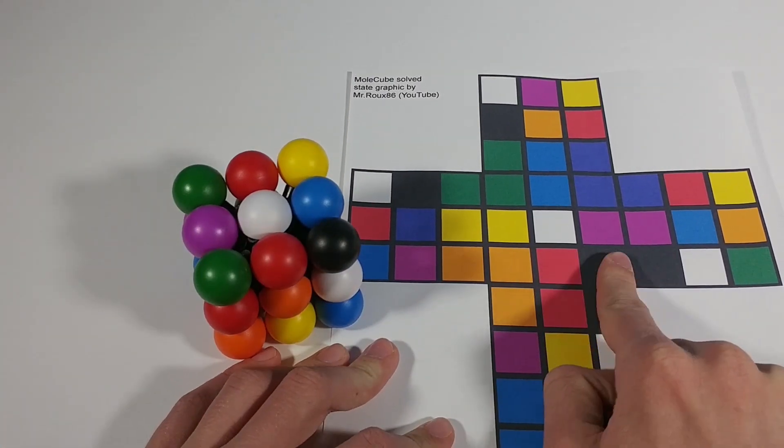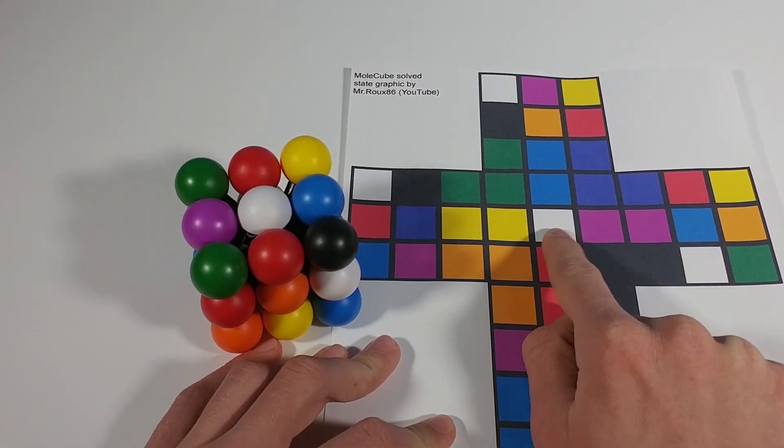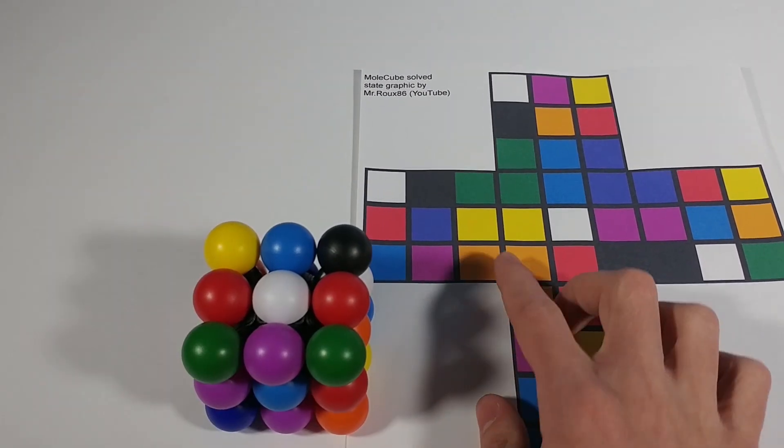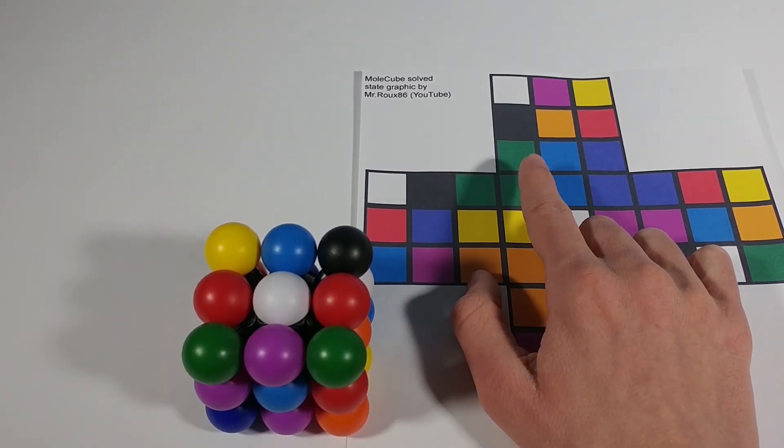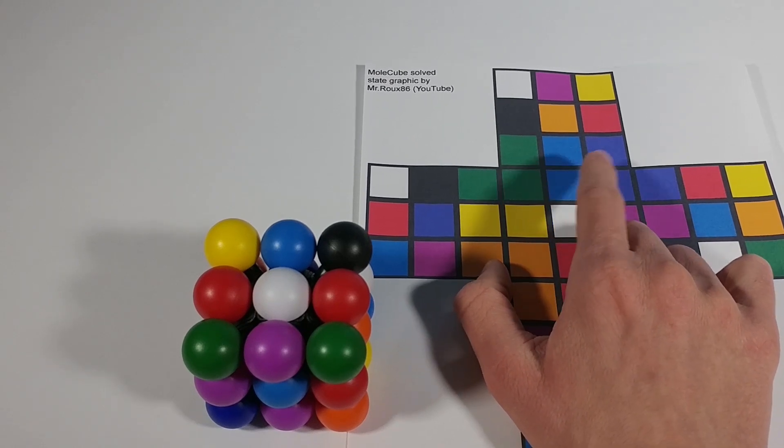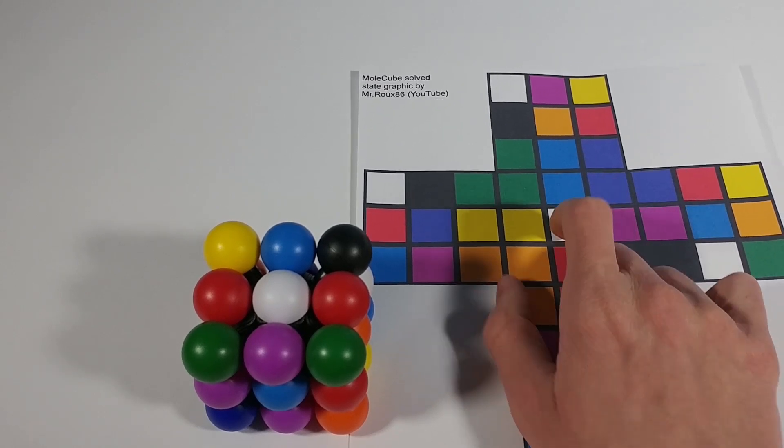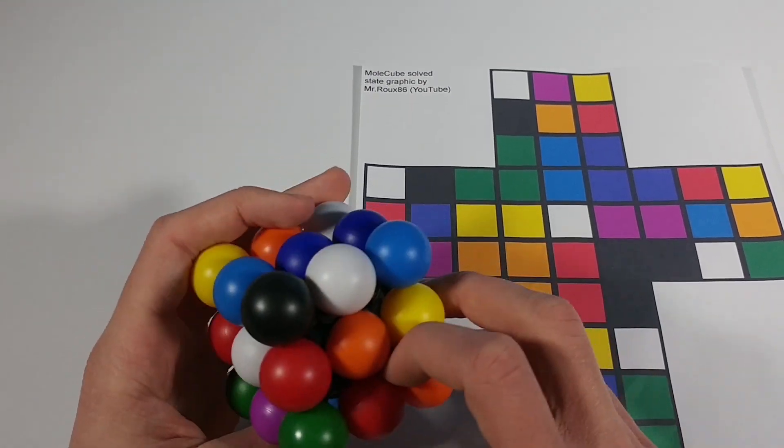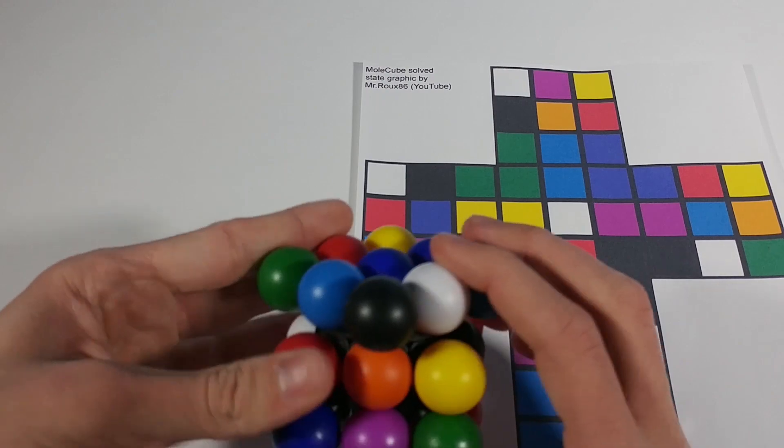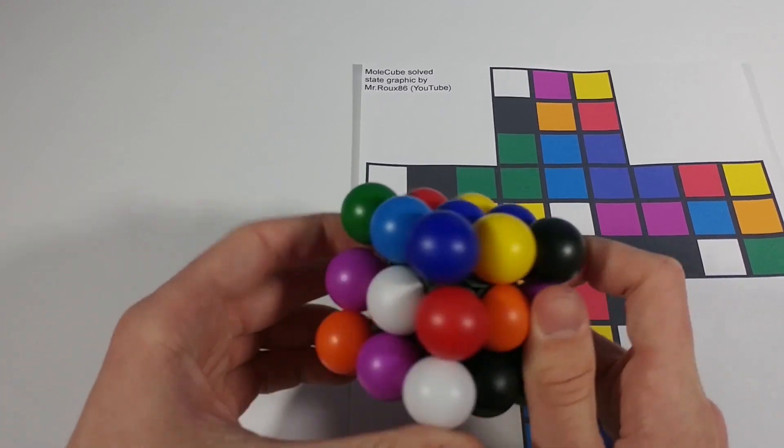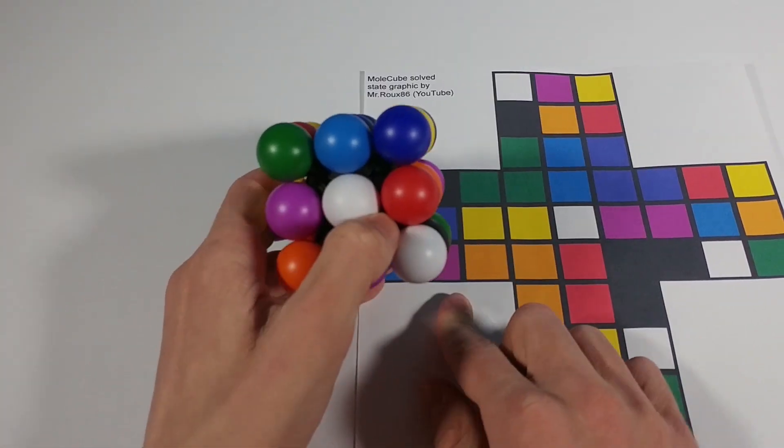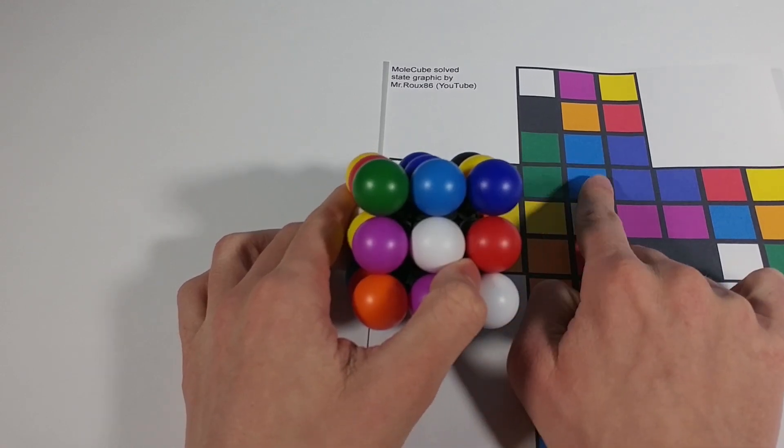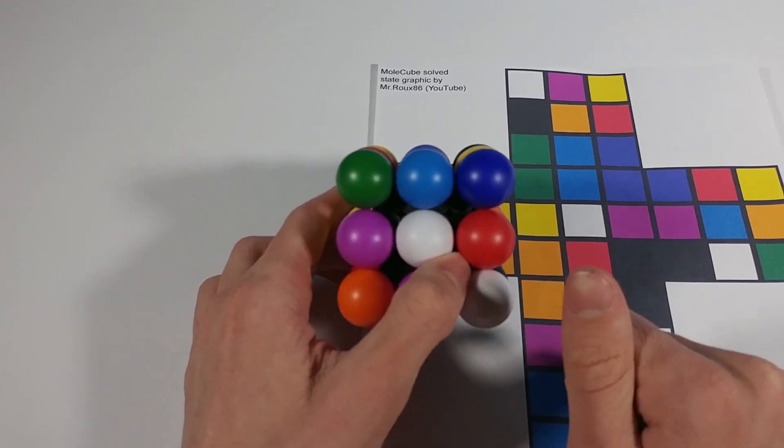So first let's start with the white layer which is these nine pieces in here. So I see up top I have a green, a light blue, and a dark blue. So what I'm going to do is I'm going to solve that right now. So here we can see that I have green, light blue, dark blue, green, light blue, dark blue. So this is good so far.